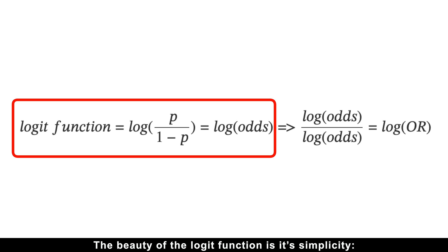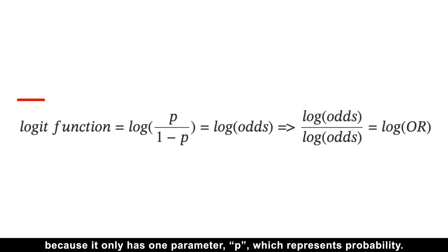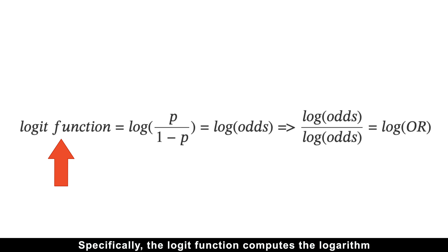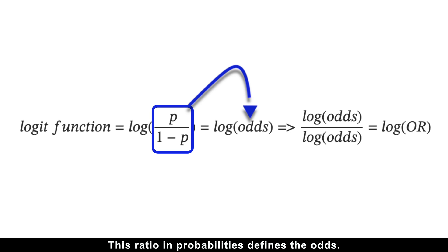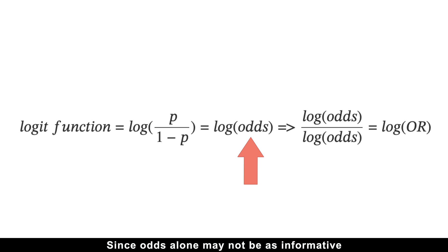Specifically, the logit function computes the logarithm of the probability of something happening through the probability of it not happening. This ratio in probabilities defines the odds. Since odds alone may not be as informative as the ratios between two odds, we ultimately arrive at log odds ratios.